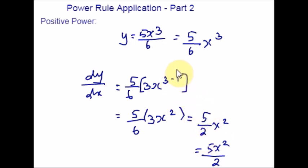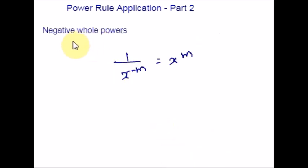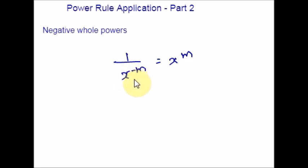Now let's move on to the next type: what do we do when we get a negative whole power of x? This is the fourth case. When x appears beneath the dividing line, it is extremely common to assign an incorrect value for n. I would like to recall a law of indices here: 1/xᵐ can be rewritten as x⁻ᵐ, because shifting a term from the denominator to the numerator reverses the sign of the exponent.